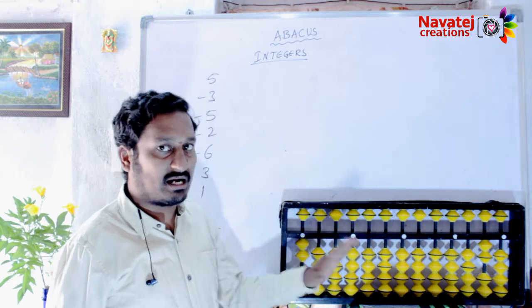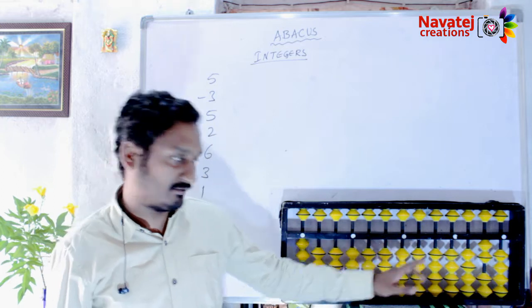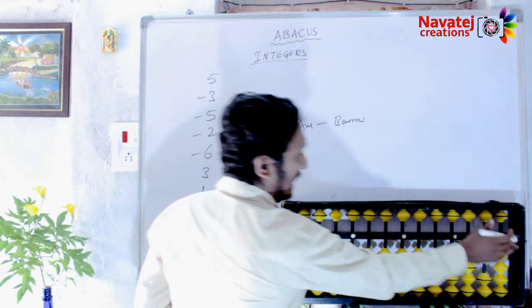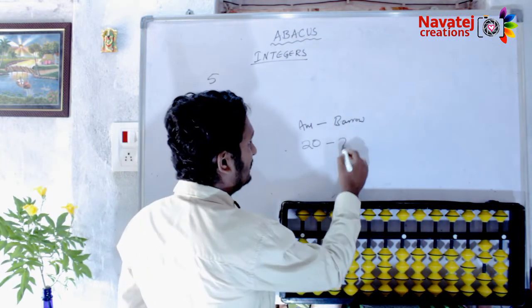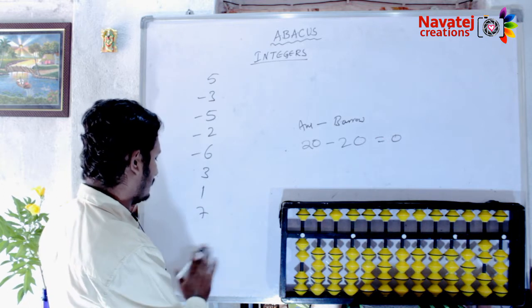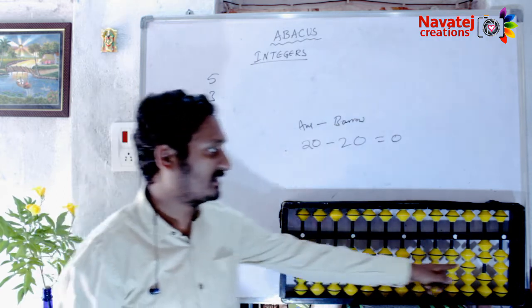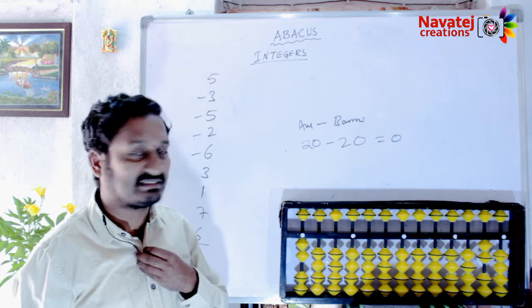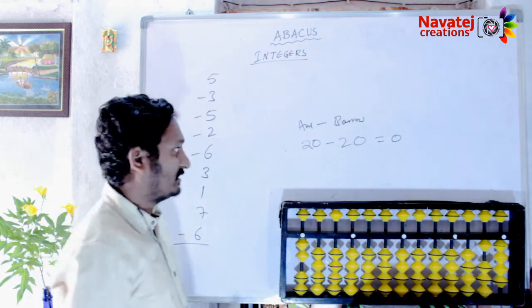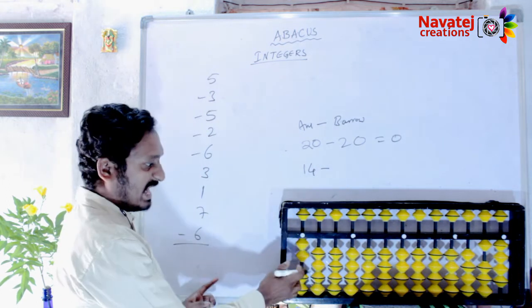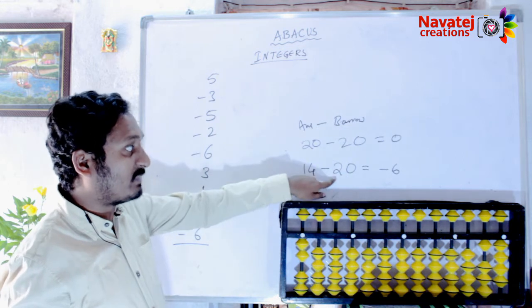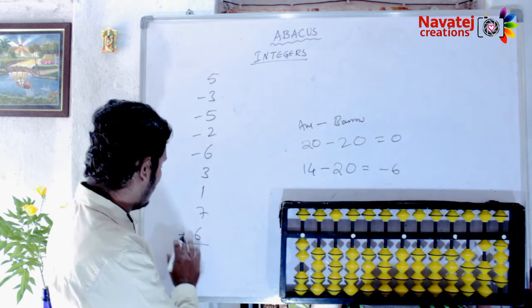Then after plus 1 — not directly available. Then after 7 — not directly available, apply formula minus 3 plus 10. Now the sum is complete, but we need to find the answer. Count the borrows: borrows are 20. So the answer is 14 minus 20, which gives minus 6. The answer is minus 6 — this is a negative answer.